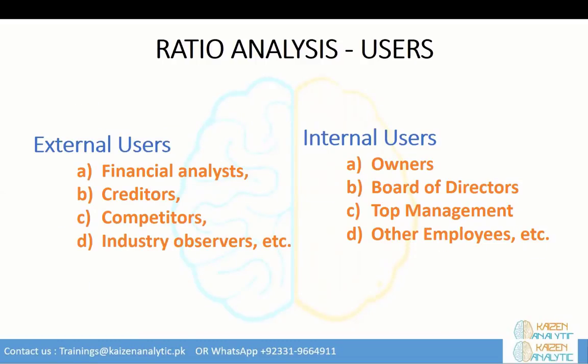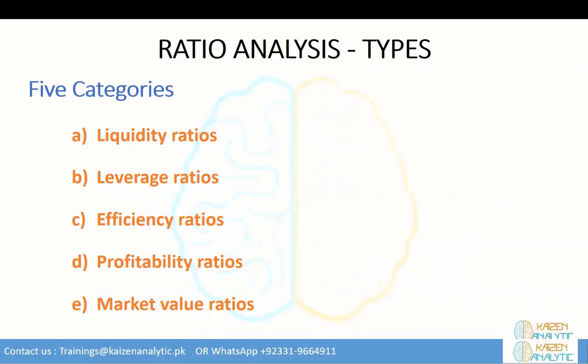Who are the users of ratio analysis? There are primarily two groups: external users — financial analysts, writers, competitors, industry observers — and internal users, starting from owners, board of directors, top management, and employees. If we broadly divide ratio analysis, there are five categories: liquidity ratios, leverage ratios, efficiency ratios, profitability ratios, and market value ratios.